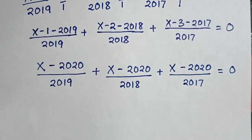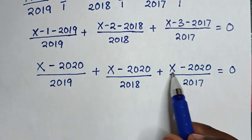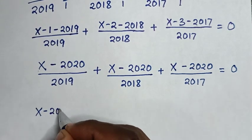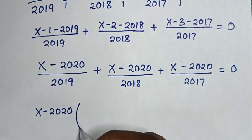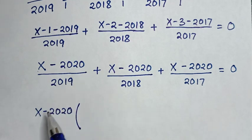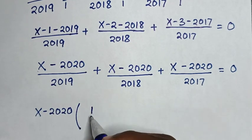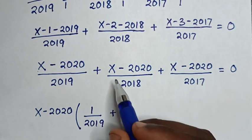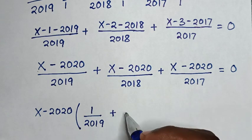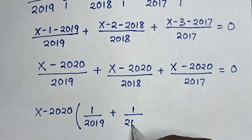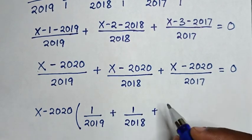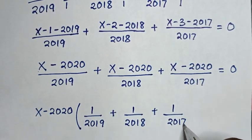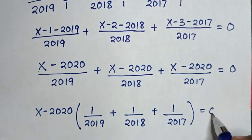From the numerator, (x minus 2020) is common. So we take (x minus 2020) out of the bracket. Then inside: 1 over 2019, plus 1 over 2018, plus 1 over 2017, in brackets, is equal to 0.